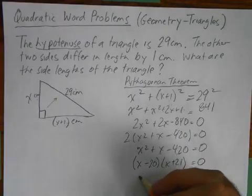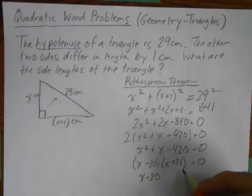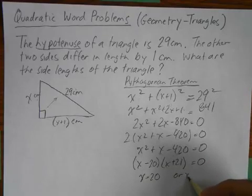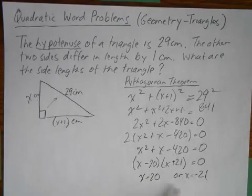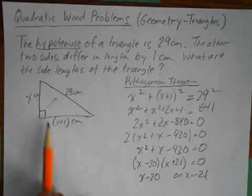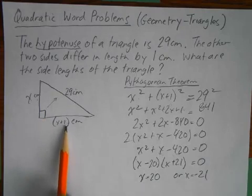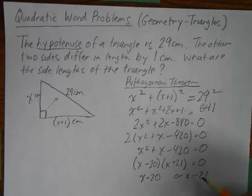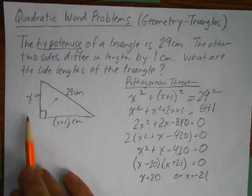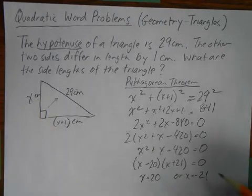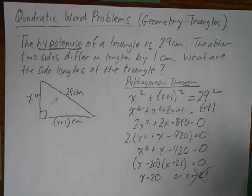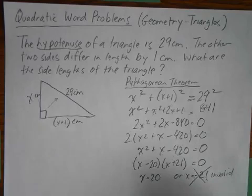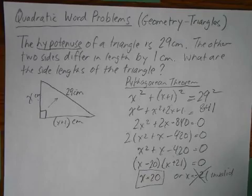So this basically means that either X equals 20 or X equals negative 21. And this is where I look to see if they make sense. So could X be 20? Well that would be 20, that would be 21. That makes sense. But negative 20, that would imply that we have a negative length. And that is definitely not happening. So that answer is invalid.